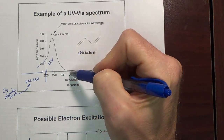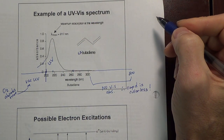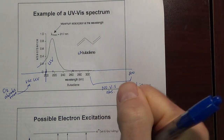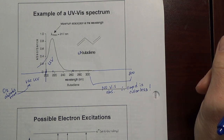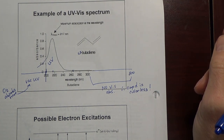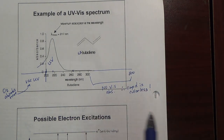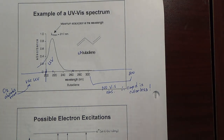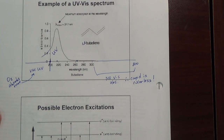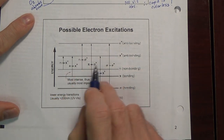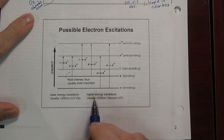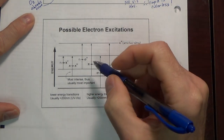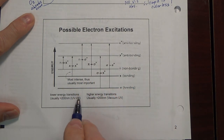Why does a compound absorb UV light? That's a similar question to why a compound absorbs IR light — what's the physics for that absorption? With IR, it was a bond-stretching frequency that matched the incoming light frequency, which allowed absorption and promotion to a higher energy vibration. In UV-Vis, we are exciting electrons, and it takes energy to excite them. Typically, that energy is in the UV or visible region.